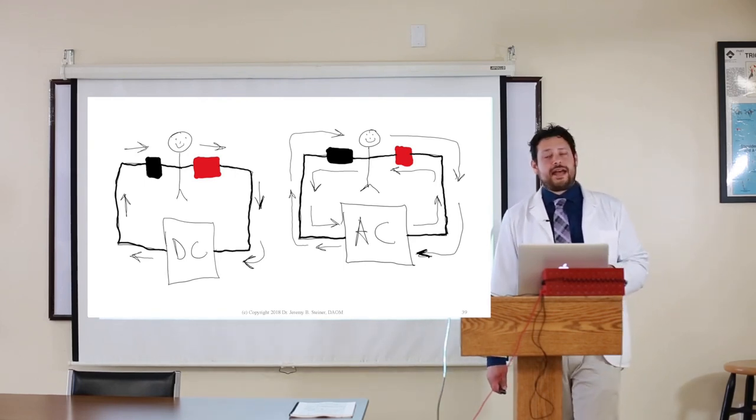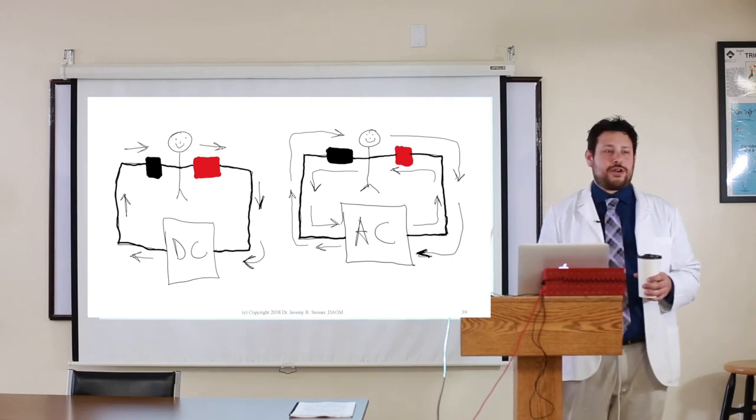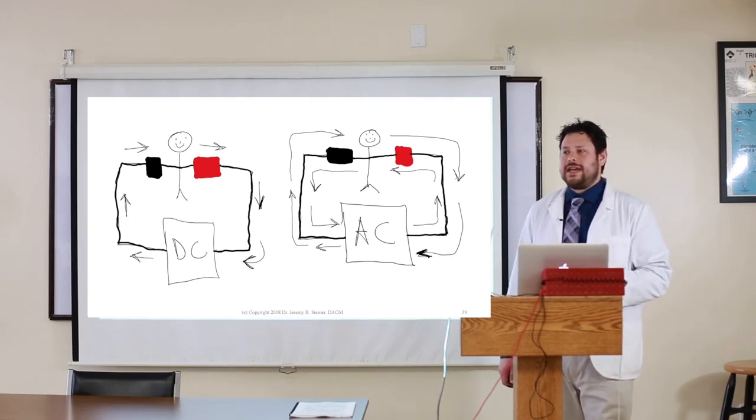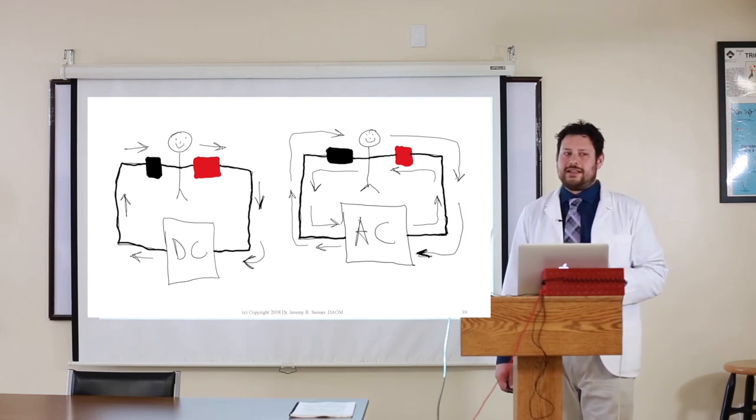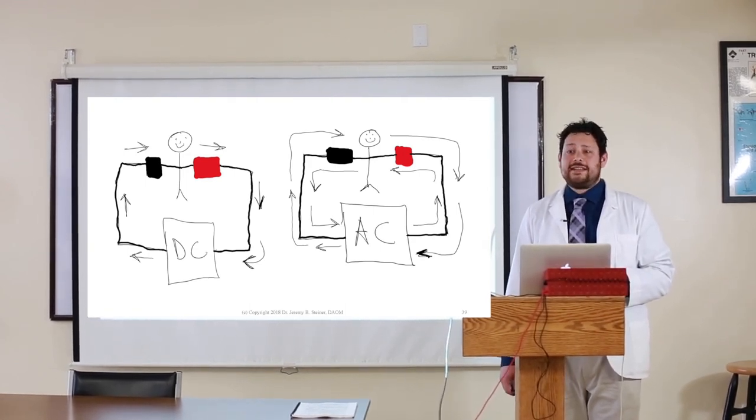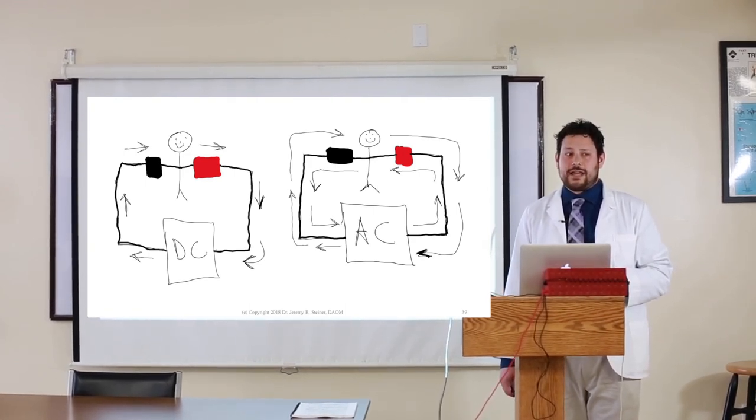The black clip actually puts out a little more electrons than the red clip. This is why when you're using an Ito, the patients tend to feel the black clip more than the red clip. But that's just because the machine circuitry is imbalanced. If you have a Pantheon, you can't tell the difference between red and black.